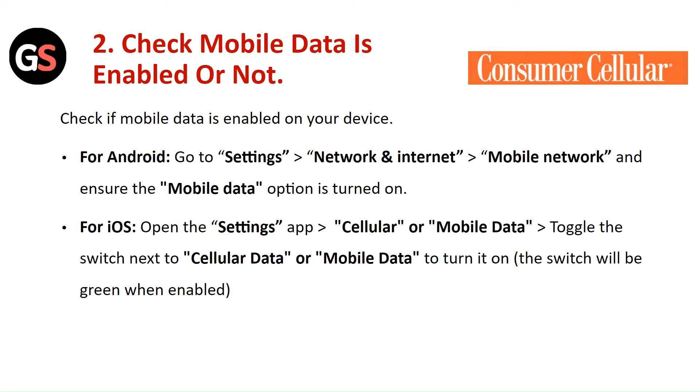For iOS, open the settings app, then go to cellular. Toggle the switch next to cellular data to turn it on.